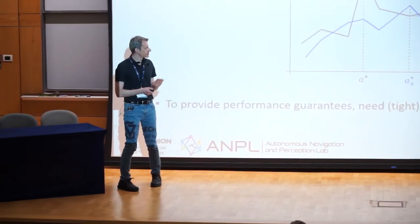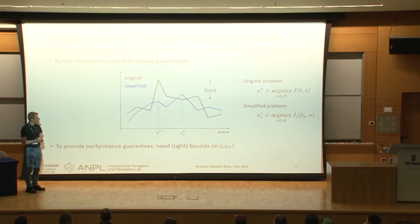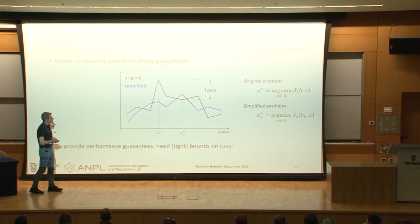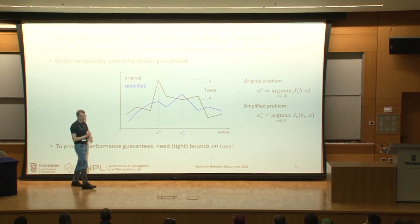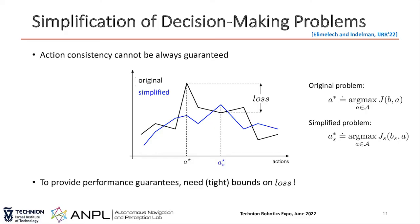Naturally, action-consistent simplification is not always possible. In practice there will be some gap between the performance achievable with the original problem and the simplified one. To get guarantees, we want to understand how much we sacrifice by going to the simpler problem.